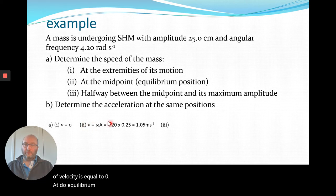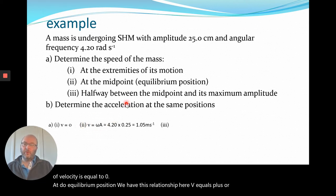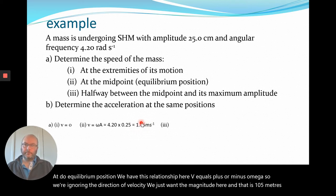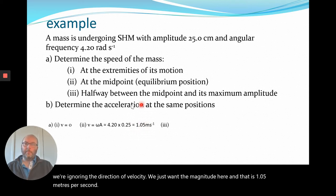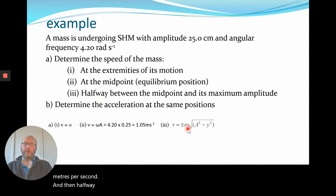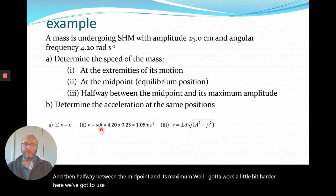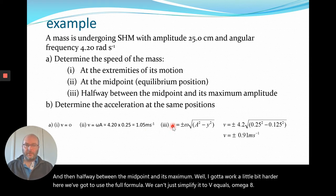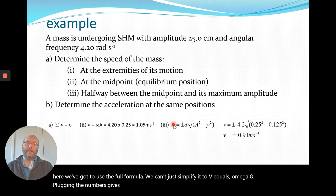At the equilibrium position we use v = ±ωA — ignoring direction, we just want the magnitude — and that is 1.05 metres per second. Halfway between the midpoint and maximum, we have to use the full formula. We can't simplify to v = ωA, so plugging in the numbers gives us 0.91 metres per second.